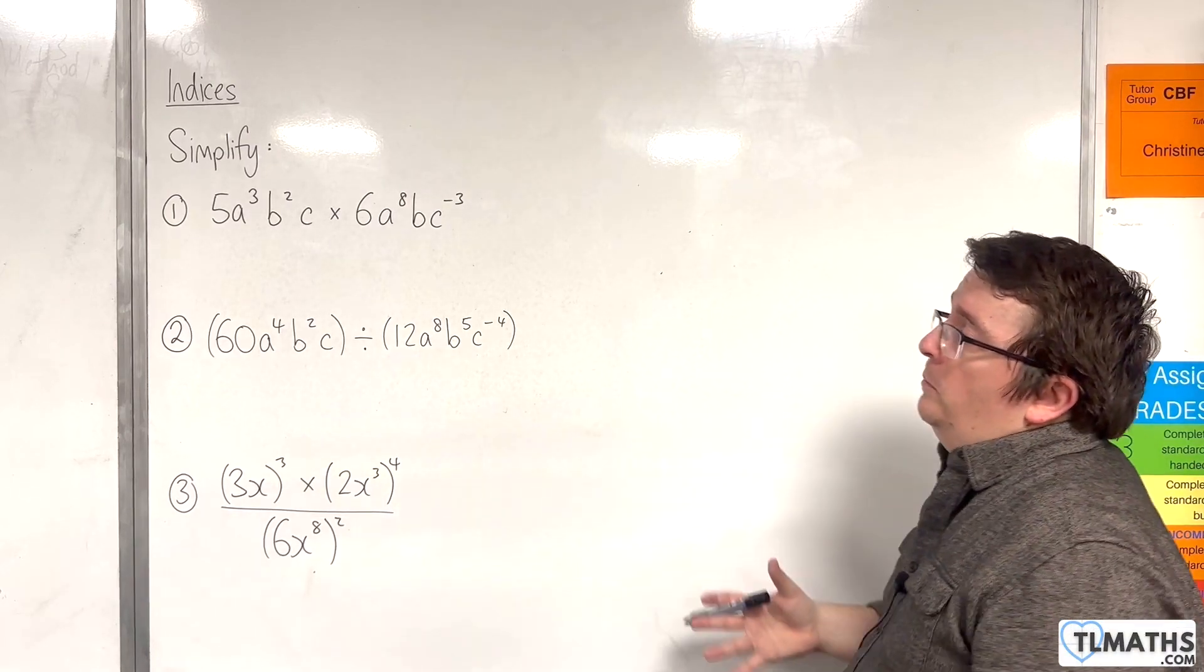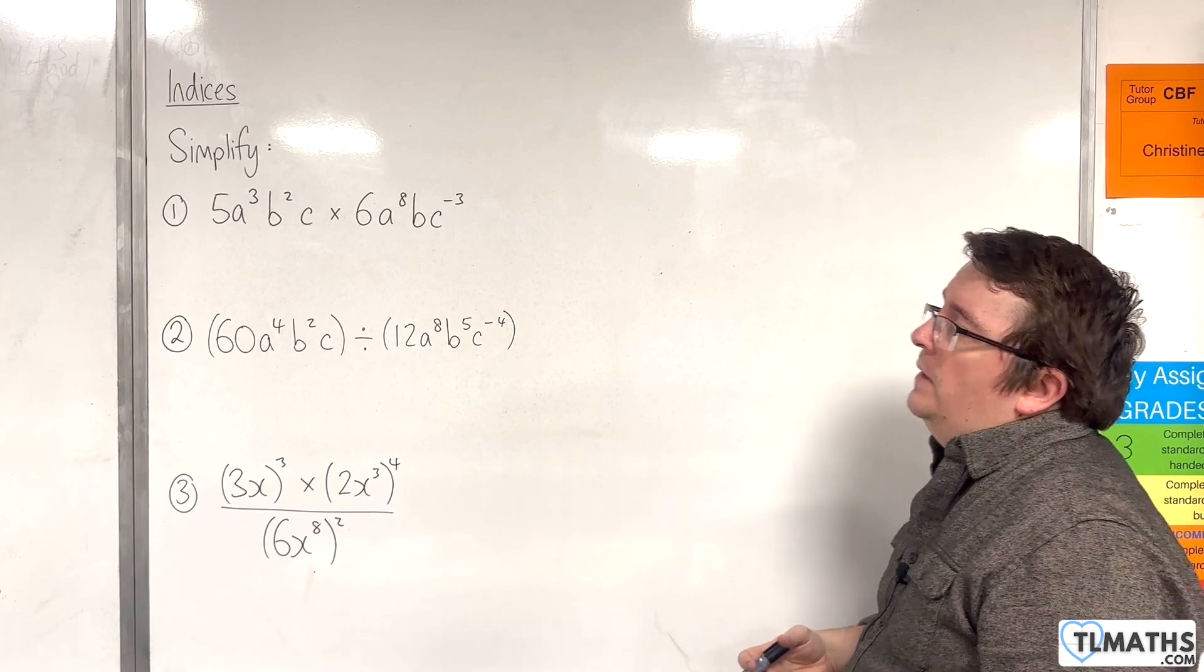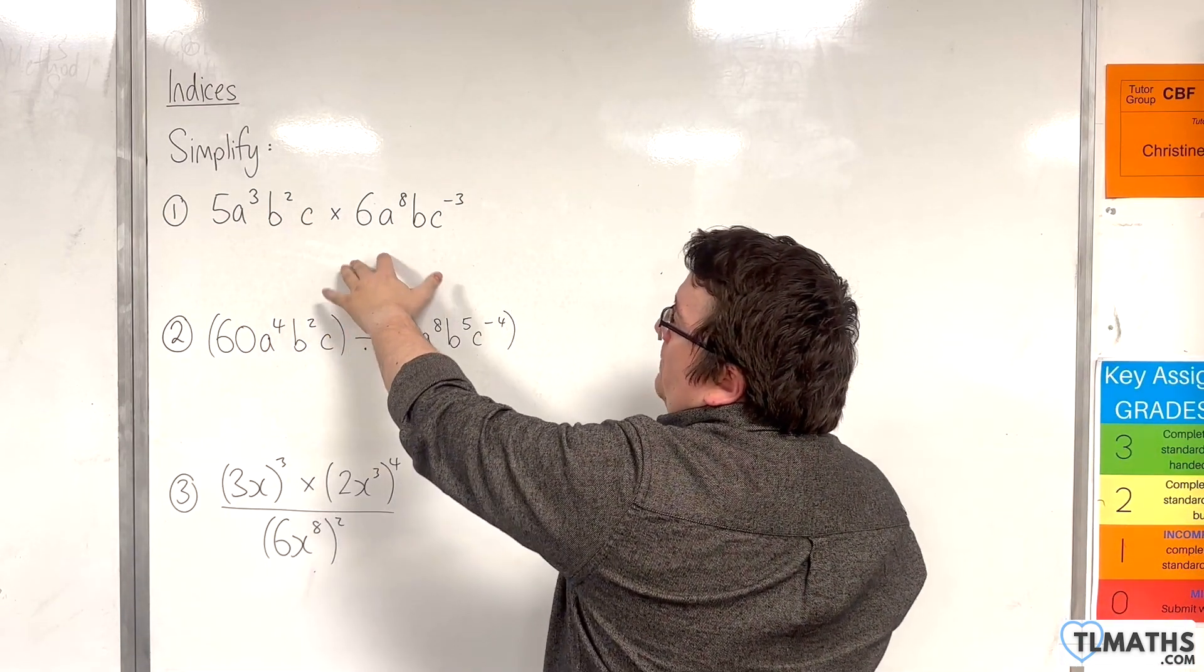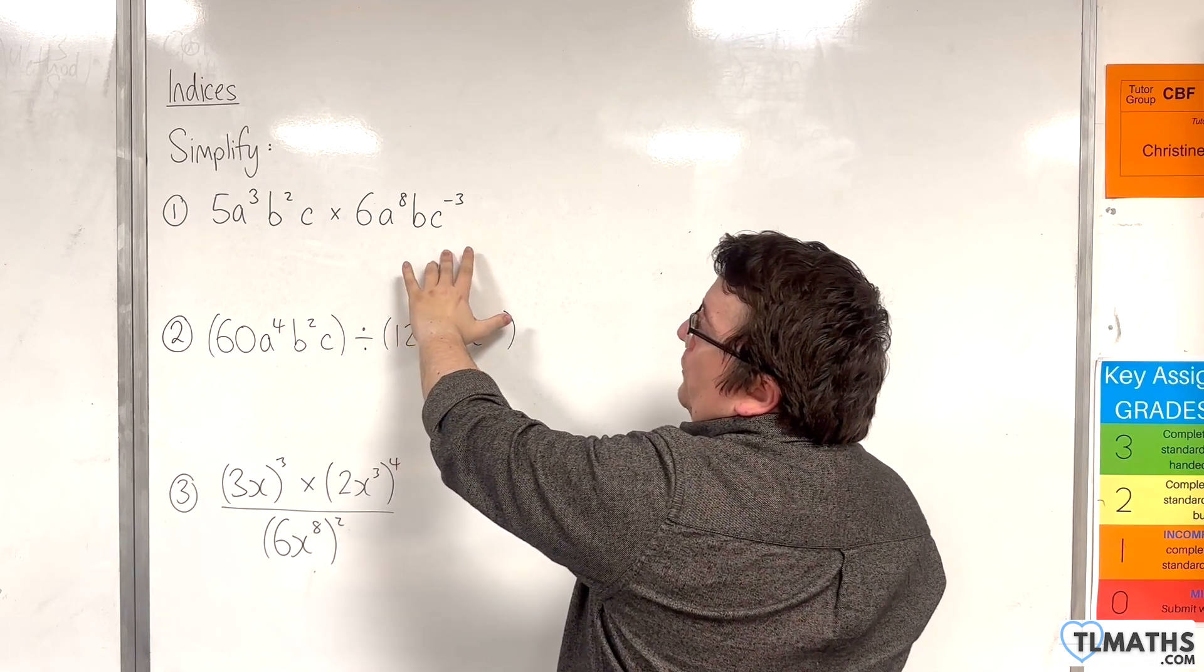In this video, I want to go through some examples of simplifying expressions. So with the first example here, we have 5a cubed b squared c times 6a to the 8b c to the minus 3.